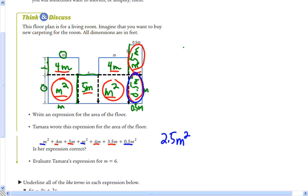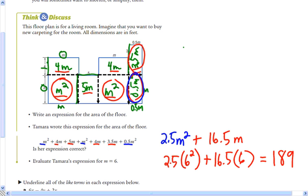4 plus 5 plus 4 plus 3 and a half is, I believe that would be 9 plus 4 is 13 plus 3 and a half is 16 and a half m. Now if I want to evaluate the expression, it's a lot easier. I can just do 2 and a half times 6 squared plus 16.5 times, whoops, this is an m squared here. This is just m. Plus 16.5 times 6. And if you do that, you get 189.